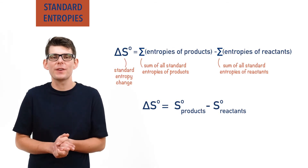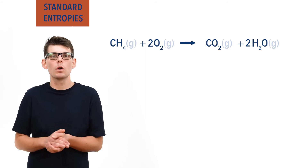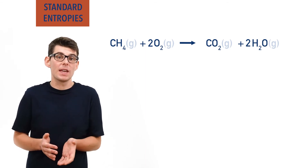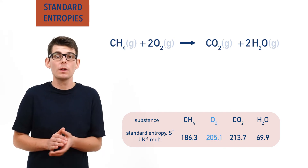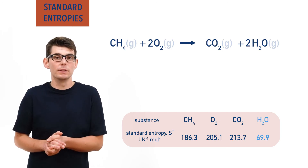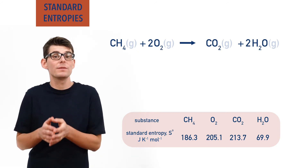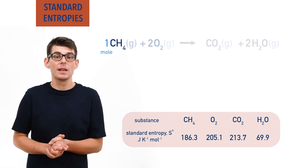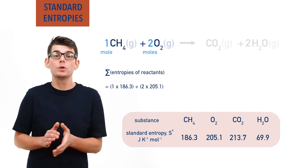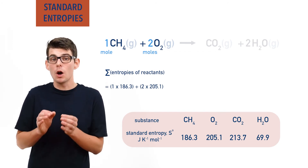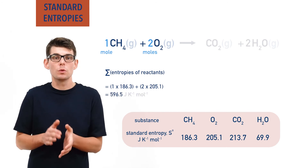Let's look at the combustion of methane as an example. One mole of methane CH₄ reacts with two moles of oxygen O₂ and forms one mole of carbon dioxide CO₂ and two moles of water H₂O. The standard entropy of methane is 186.3, oxygen 205.1, carbon dioxide 213.7, and water 69.9 — all in joules per Kelvin per mole. We also have to account for the number of moles of particles involved. One mole of methane reacts but two moles of oxygen react, meaning the sum of entropies of reactants would be one times 186.3 plus two times 205.1, giving a total entropy of reactants of 596.5 joules per Kelvin per mole.